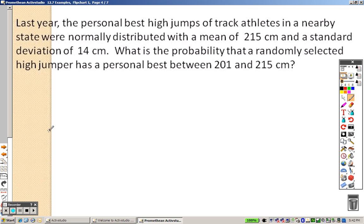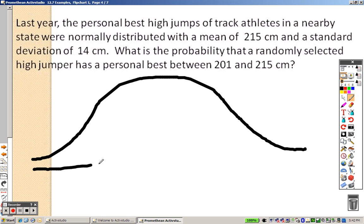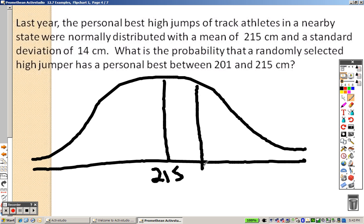Take a look here at the next one, identical problem as the last. There's my curve, there is my line, there's the median, and the median, they are saying, is 215, so it's just different numbers. And, the standard deviation is 14, so 215 plus 14, so that means this is 229.